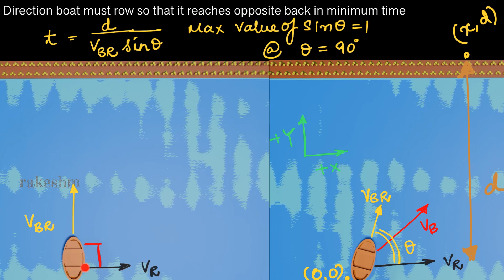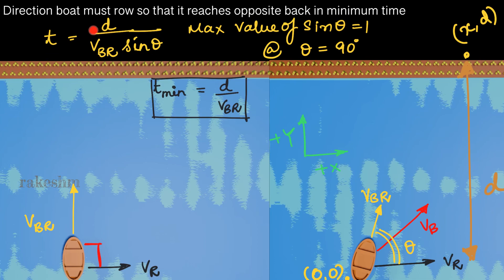The angle between vr and vbr must be 90 degrees. The minimum value of time becomes t_min equals d divided by vbr, since sinθ equals 1, so time becomes d divided by vbr.